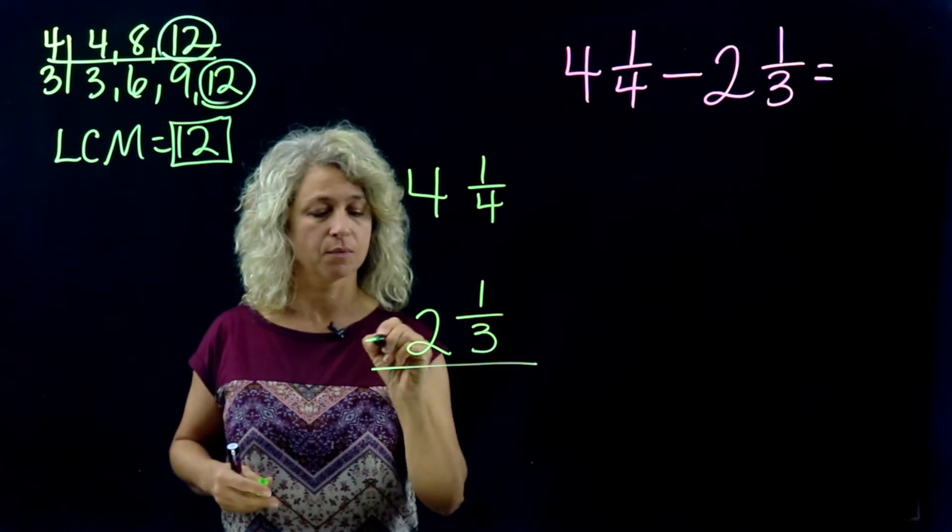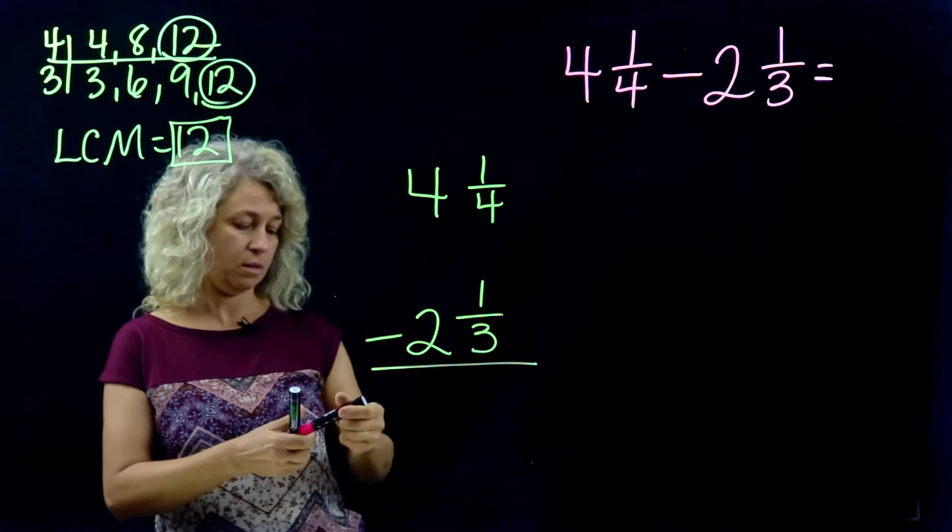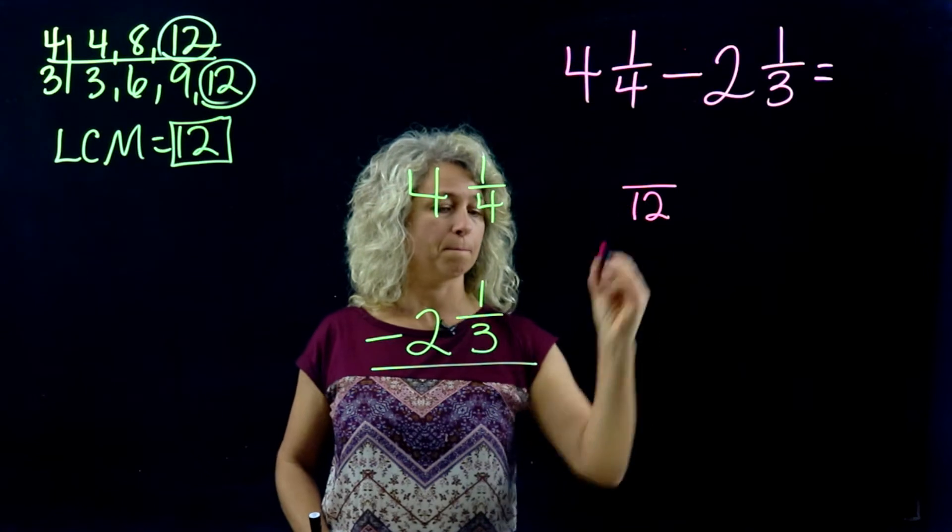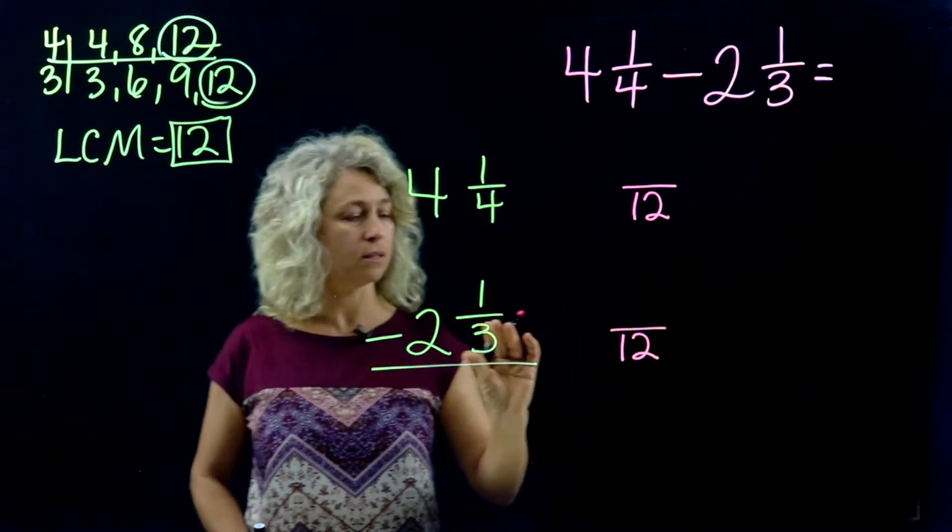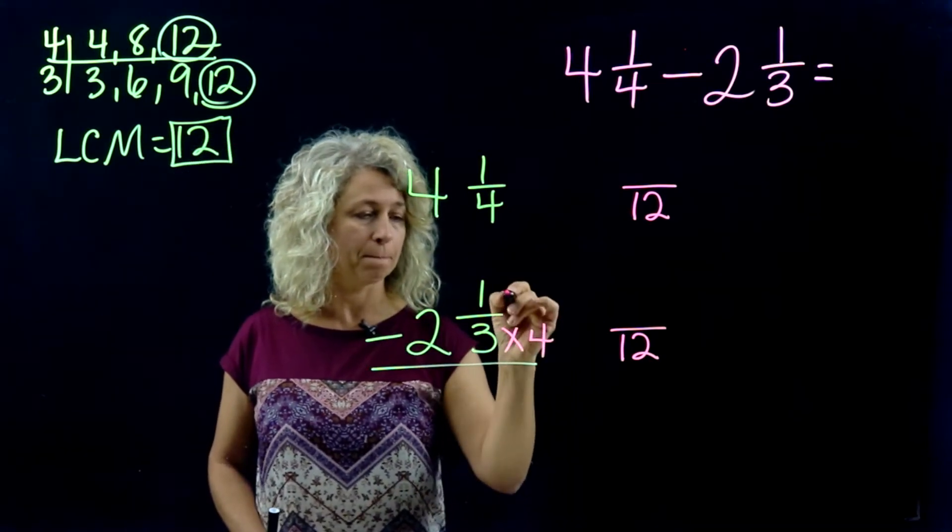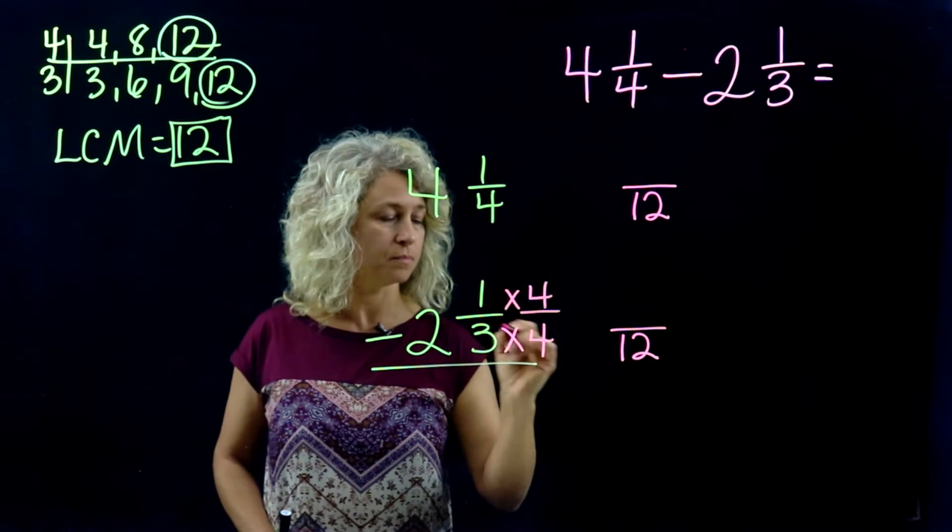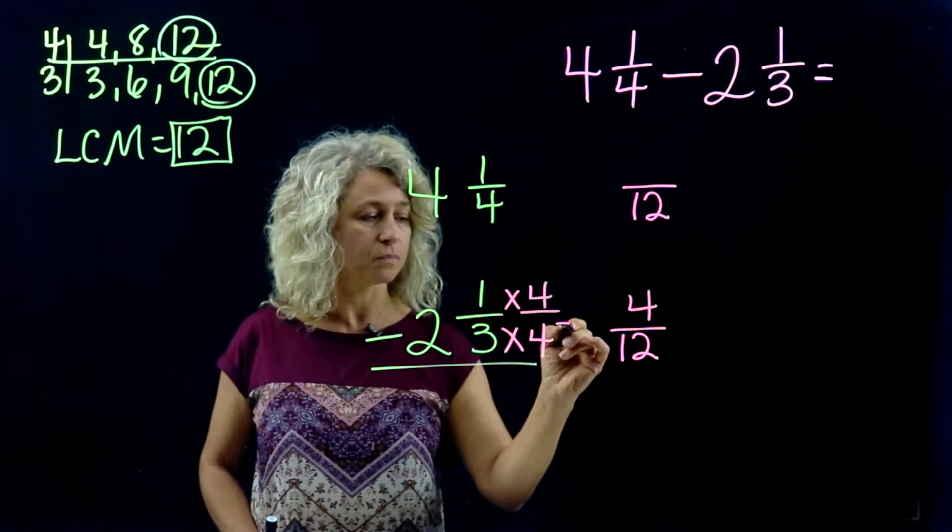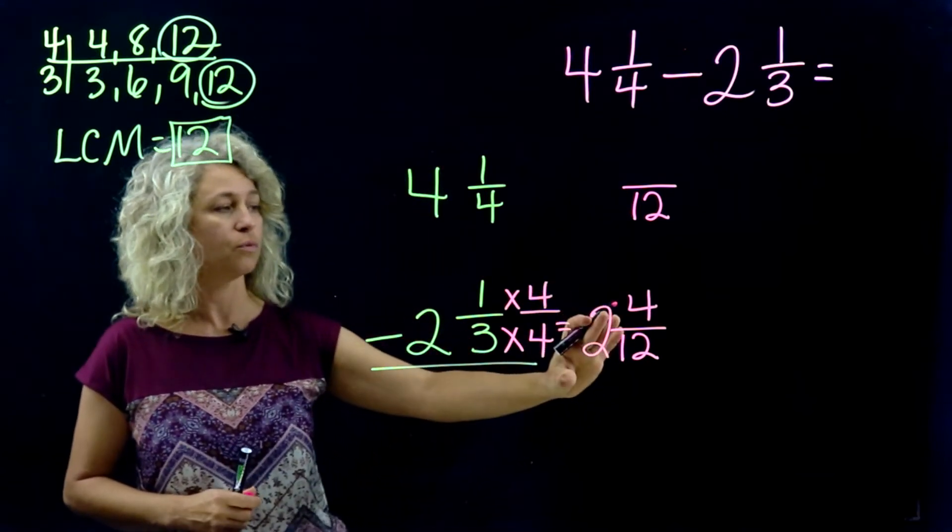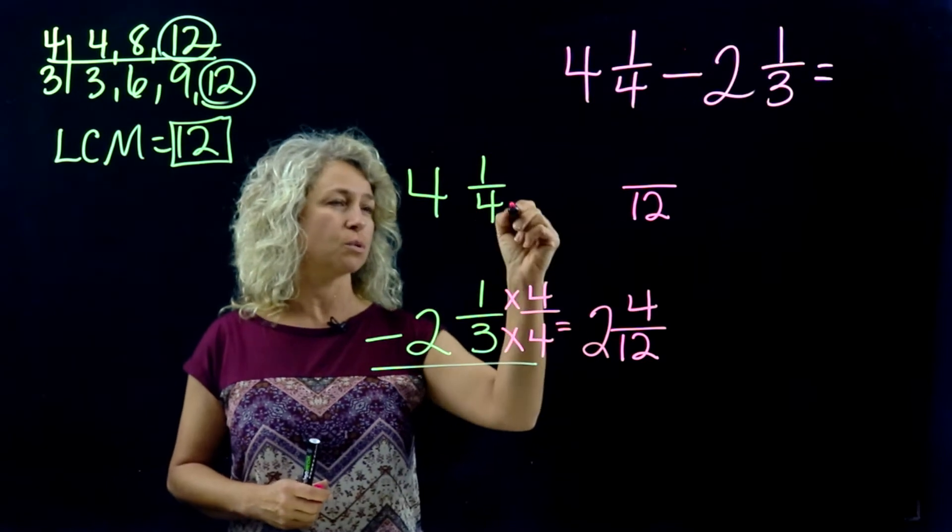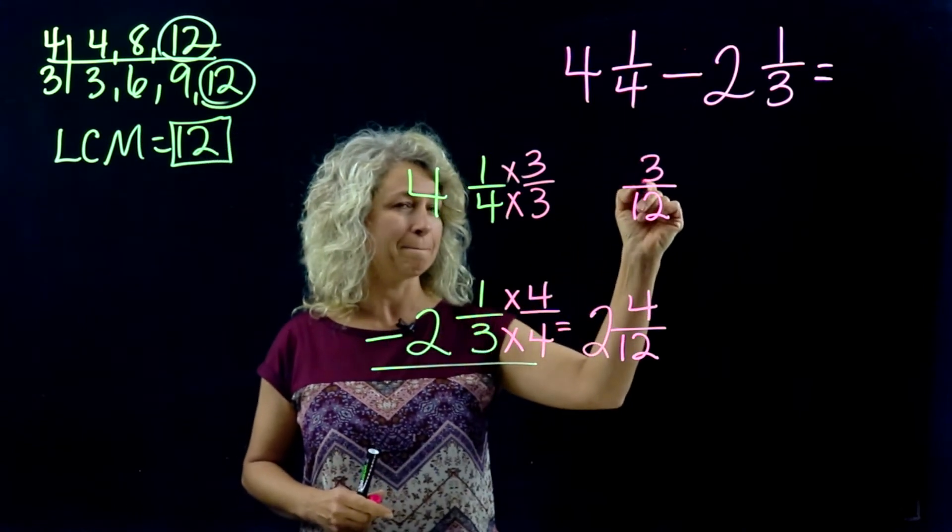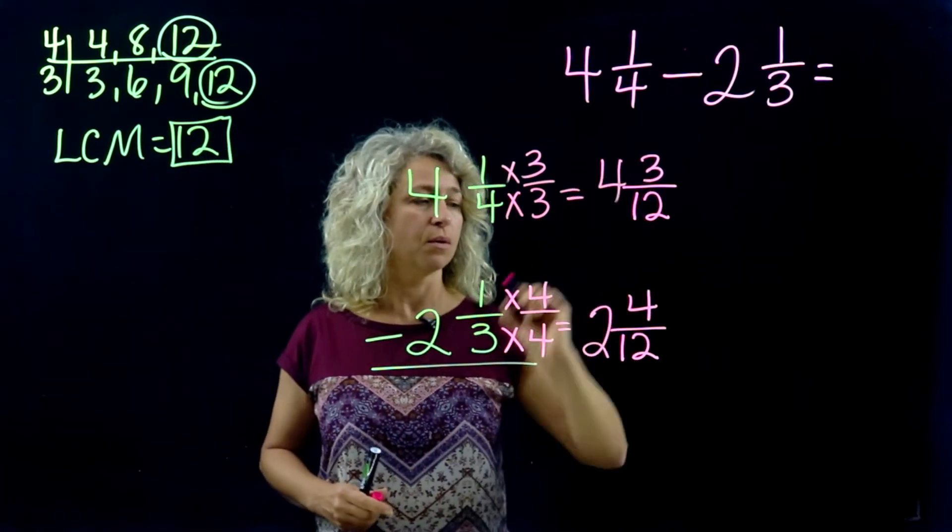Twelve is my new denominator. Let's think, how do you get from a 3 to a 12? Well, times 4, right? So do the same here and this becomes 4/12. Now remember that whole number, that's got to go with the problem, just bring it on over. Four times what is 12? Times 3. So do the same to the numerator: 1 times 3 is 3. And bring over the whole number.